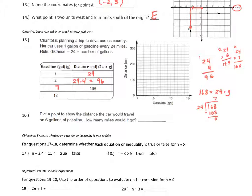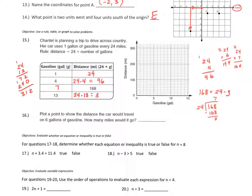For the last table entry, I need 24 times 13. Working it out: 24 times 13 equals 312 miles. Now that the table is complete, I can move on to making the graph.